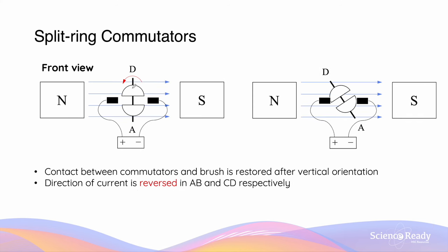As the coil continues to rotate due to momentum, the two split ring commutators will make contact with the brushes again. But this time, the contact is different to before. The commutator on side D now makes contact with the left brush, while the commutator on side A makes contact with the right brush.